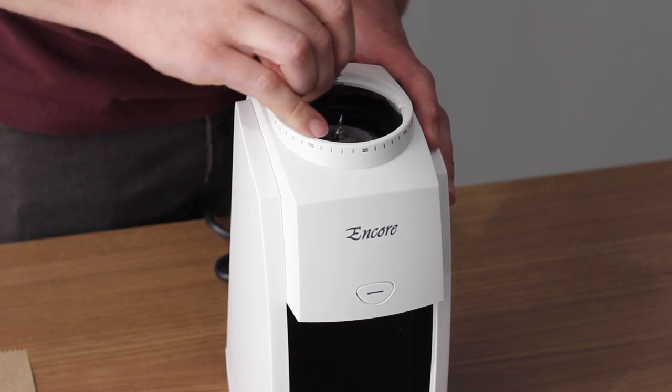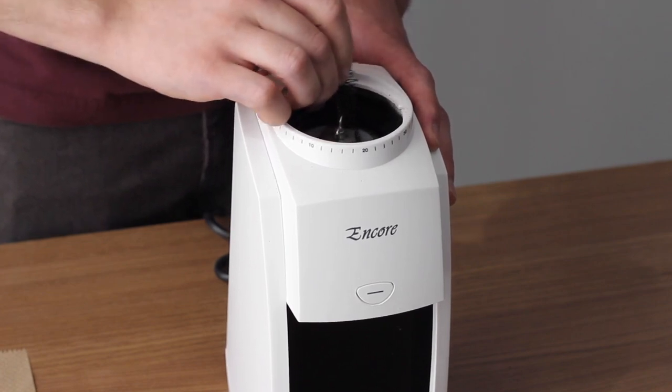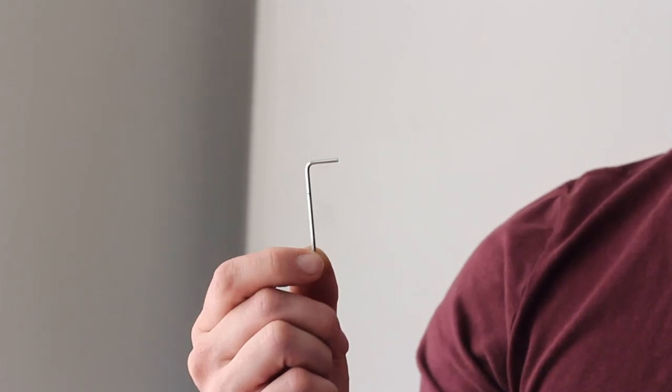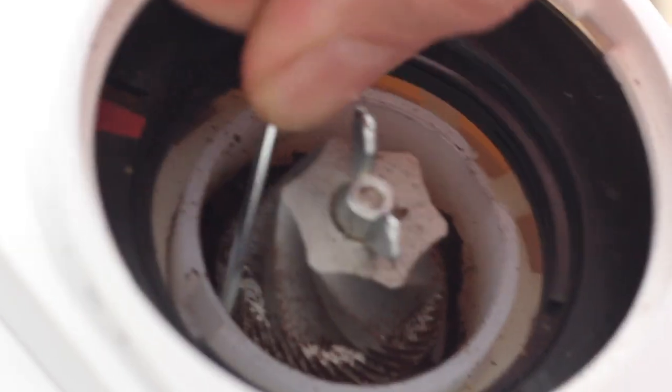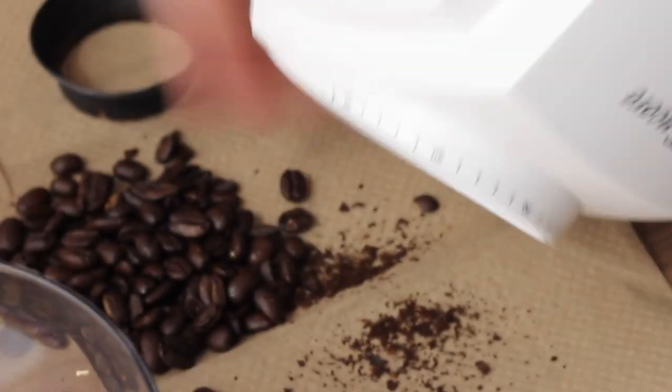And if it's really clogged and you can't get it with the wire brush, you can also use something like a small allen key. It's harder so you can press into the clogged grinds easier to knock them loose. And we'll want to knock them out periodically as we're doing this.